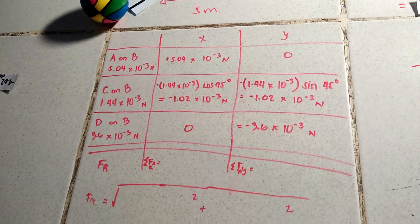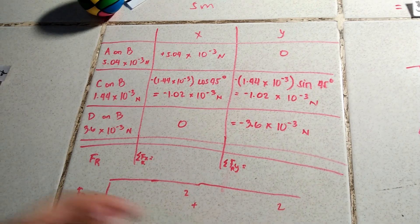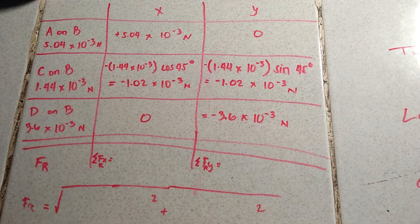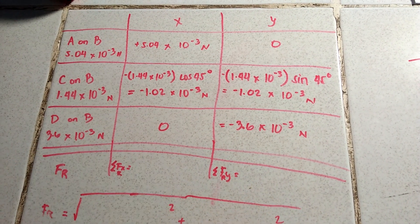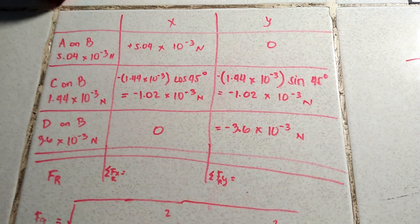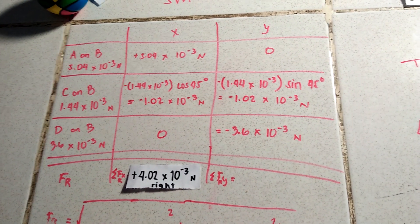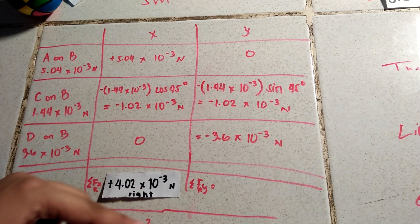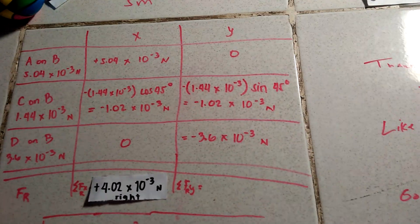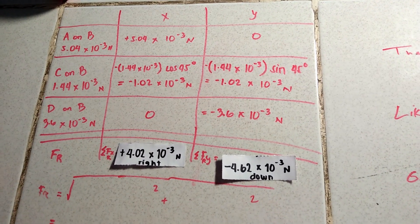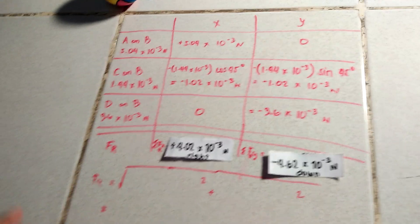And then once we have all those values for X and Y, the thing with the resultant force is we can now add them up. So that's positive 5.04, et cetera, minus or plus negative 1.02. So the answer is positive 4.02 times 10 to the negative 3, going right. Because positive is the dominant. And then for the other side here, that's negative 1.02 plus negative 3.6, et cetera. The answer is negative 4.62 times 10 to the negative 3 downwards. Because negative is the answer. So it's going down. And these X and Y components give us the resultant force.